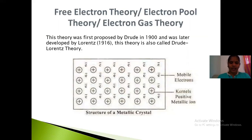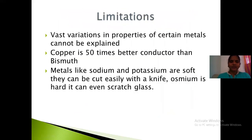This theory quantitatively explains a number of metallic properties. It explains optical properties, electrical conductivity, and thermal conductivity — since the electrons are free and released into the crystal lattice, they can move from one place to another. However, there are limitations: the free electron theory does not explain why some metals have more strength than others, or why copper and other metals have different conductivities.